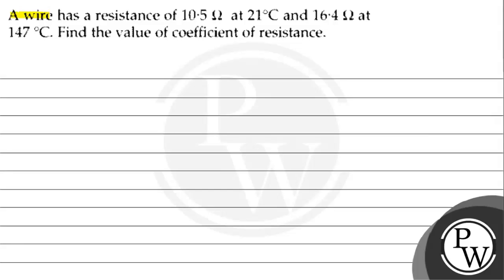Hello, the question says that a wire has a resistance of 10.5 ohm at 21 degrees Celsius and 16.4 ohm at 147 degrees Celsius. Find the value of coefficient of resistance. Okay, here is a little mistake - it should be temperature coefficient of resistance.